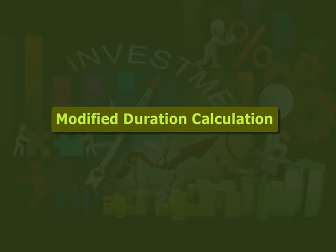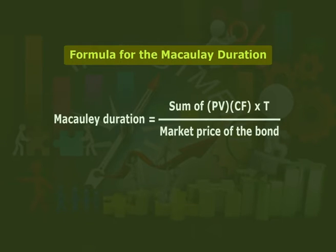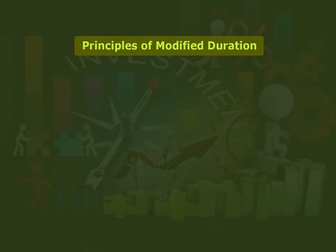Now we will learn the modified duration calculation. Modified duration is an extension of Macaulay duration, which allows investors to measure the sensitivity of a bond to changes in interest rates. In order to calculate modified duration, Macaulay duration must first be calculated. The formula for Macaulay duration is: Macaulay Duration = Σ [PV(CF) × t] / Market Price of the Bond, where PV(CF) is the present value of a coupon at period t, and t equals the time to each cash flow in years. This calculation is performed and summed for the number of periods to maturity.